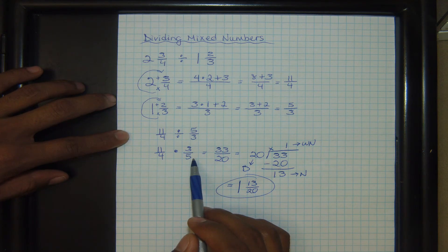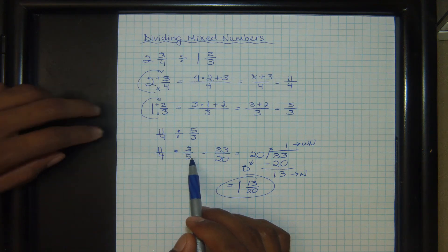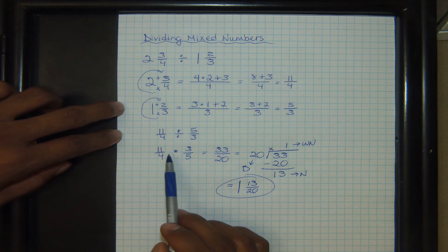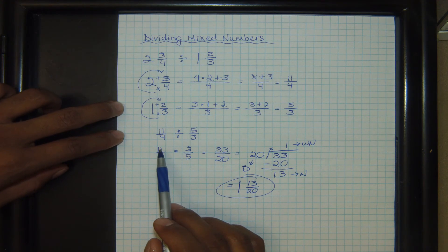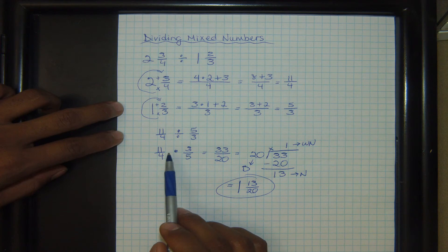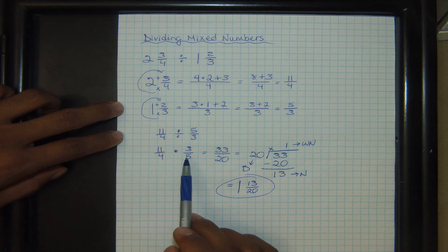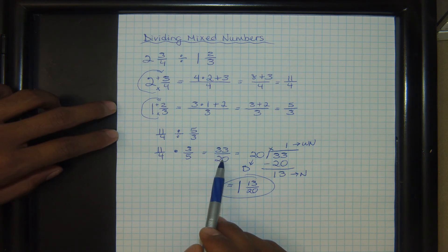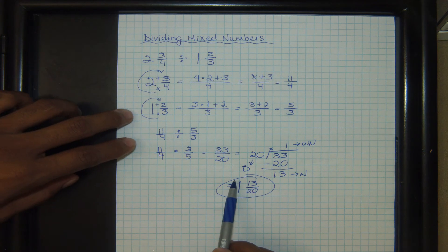The reciprocal of the second fraction, which means to flip the second fraction. And then we go ahead and multiply. When you multiply, you multiply straight across. Eleven times three, four times five. That's going to give you thirty-three over twenty. And we want to change that to a mixed number.